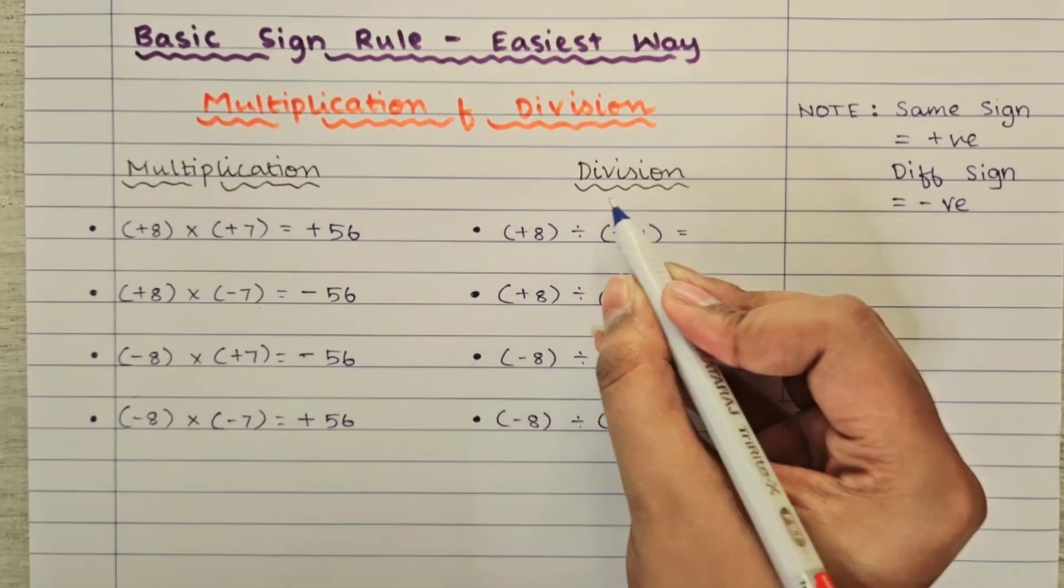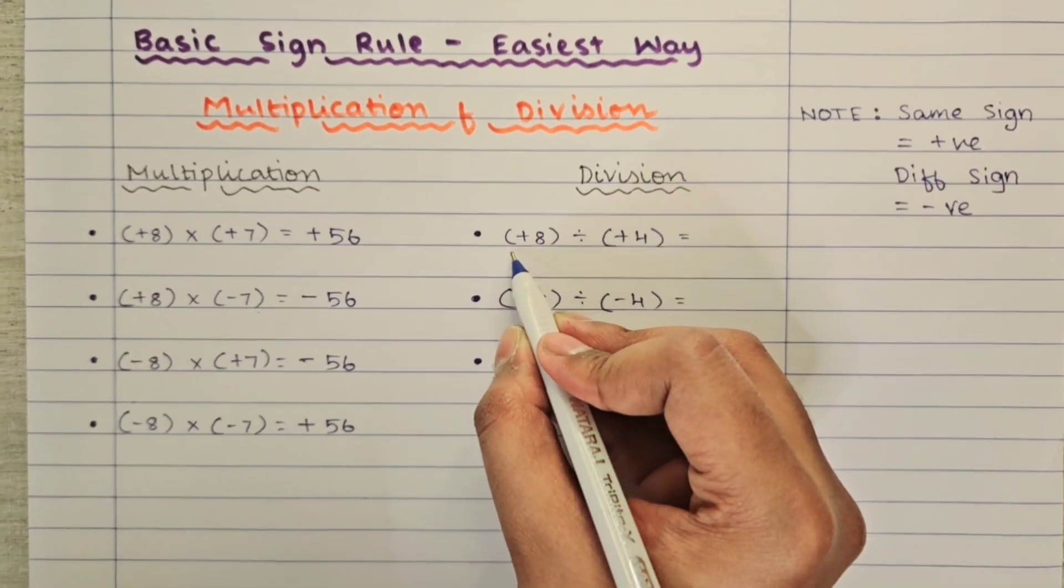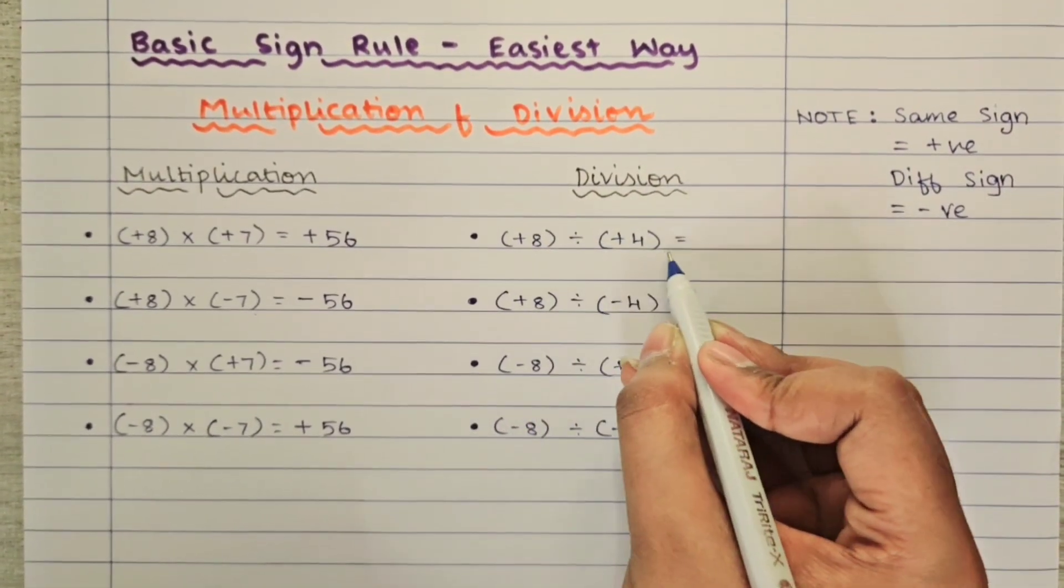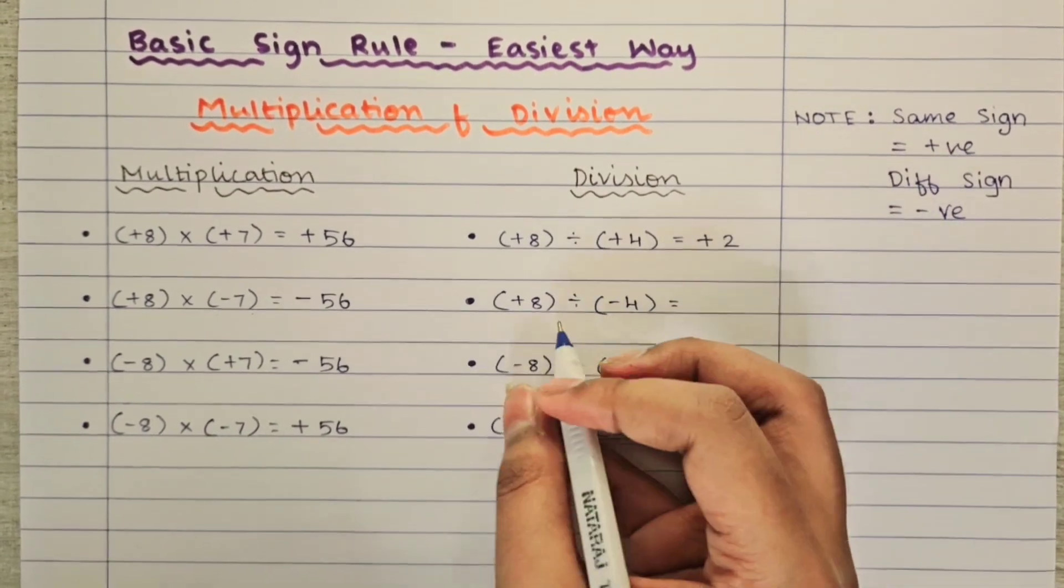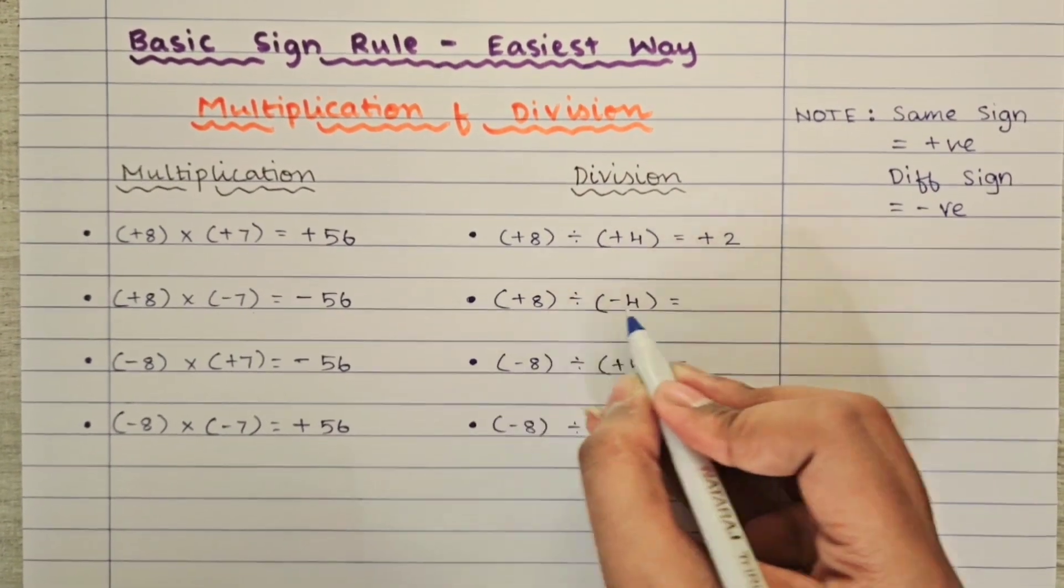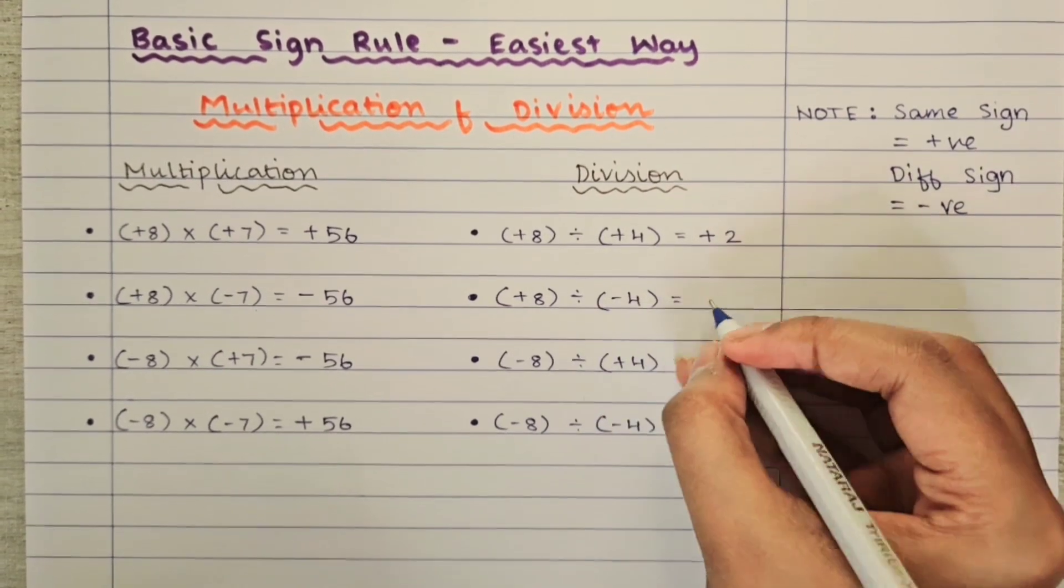Next, we will move on to the division. Here plus 8 divided by plus 4. Both positive, so positive number, plus 2. Plus 8 divided minus 4. Different sign, so minus 2.